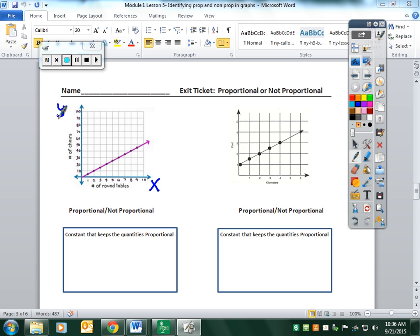This one has specific labels: number of round tables for x and number of chairs for y. A couple things to keep in mind when graphing: we're connecting all our dots together, we want to label our (0,0), and technically we should have a title at the top. The question is asking whether this is proportional based on a graph.